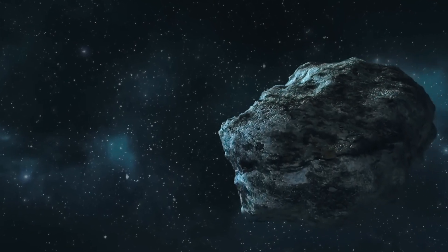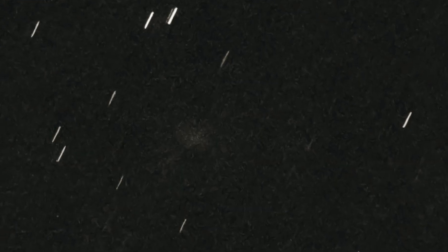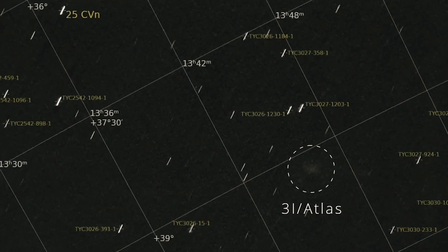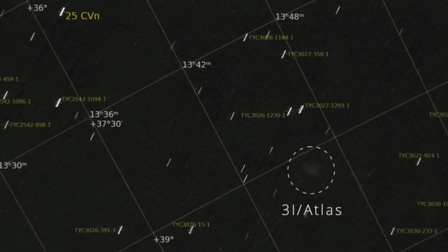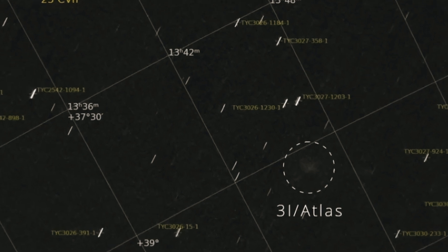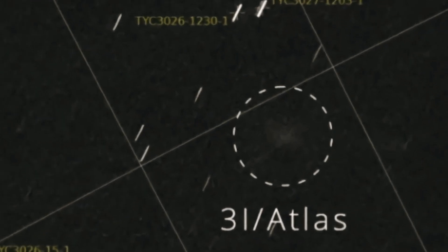The most intense part of 3i Atlas's journey is nearly here. On October 29th, it will swing past the Sun at just 0.53 astronomical units, and what happens then could rewrite everything we know about interstellar comets.